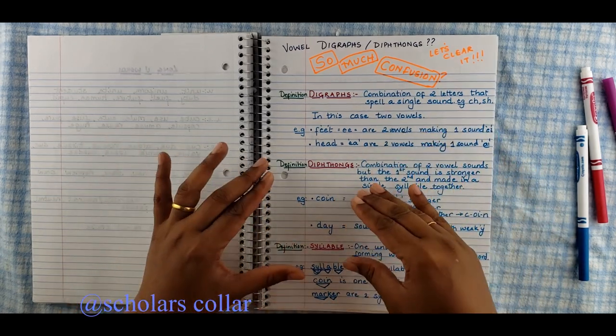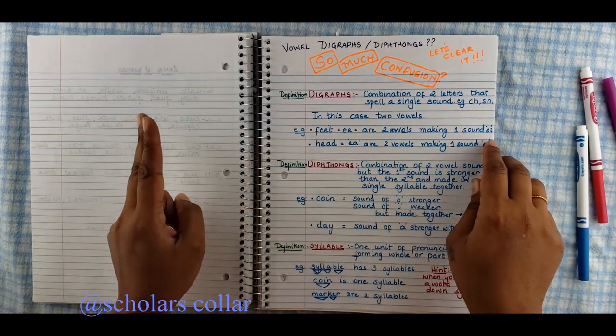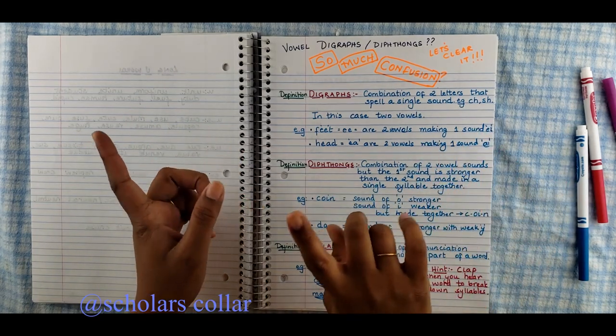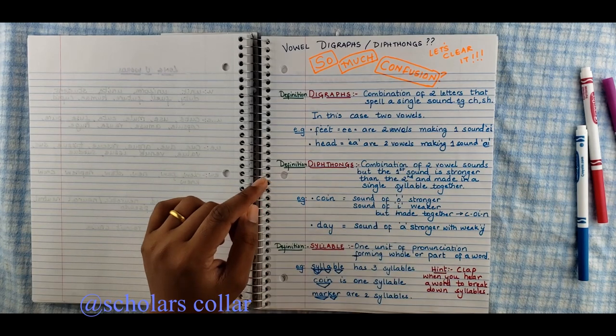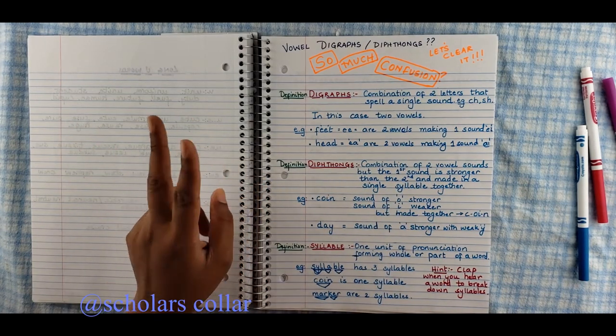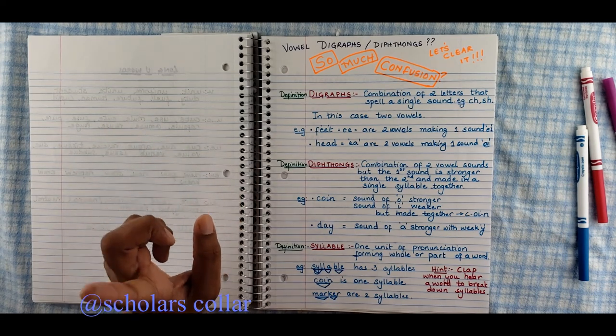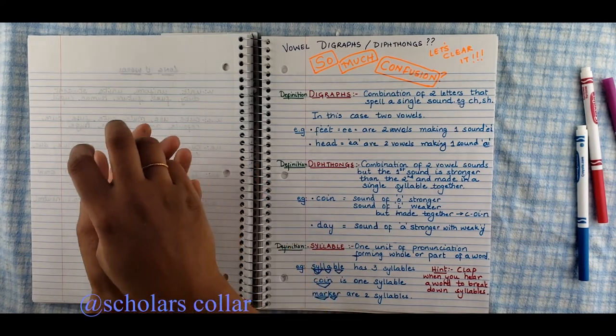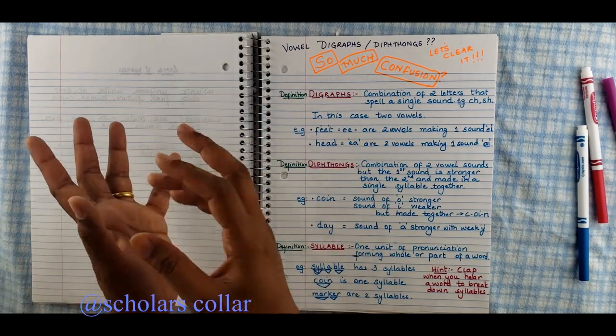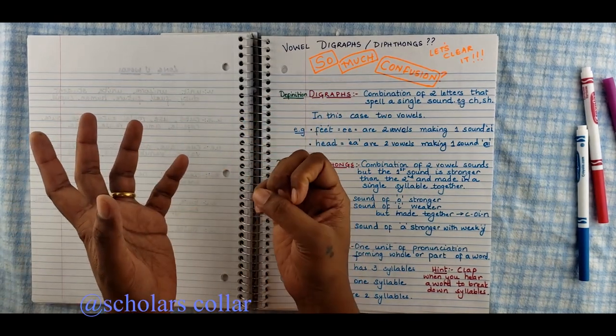So digraphs, two letters make one sound. You see here. Double E makes one sound, E. E and A makes one sound, E. Head. Like E. What is diphthong?